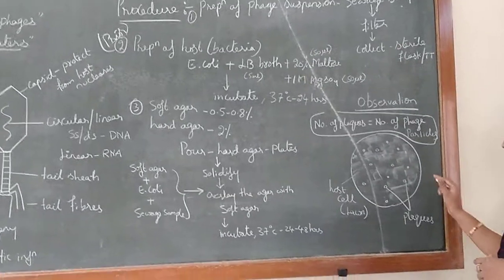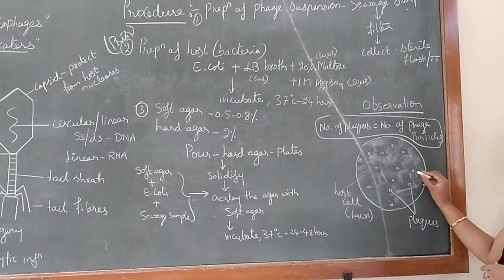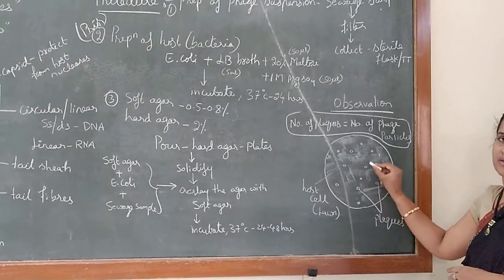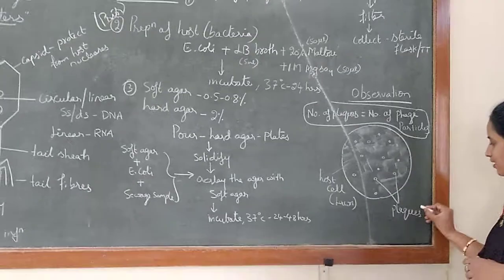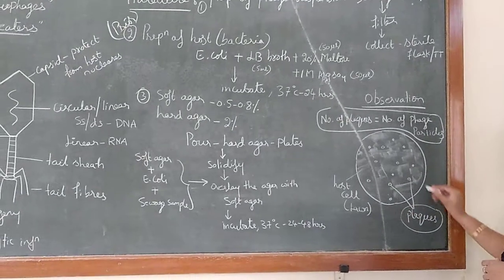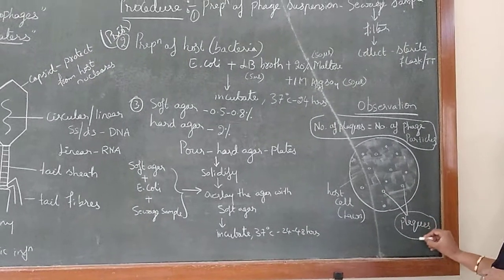So the whole plate will be having the culture of the E. coli. But when you observe, you can see the clear zones on the surface of the plate, which are nothing but the plaques. The clear zones are considered as the plaques.